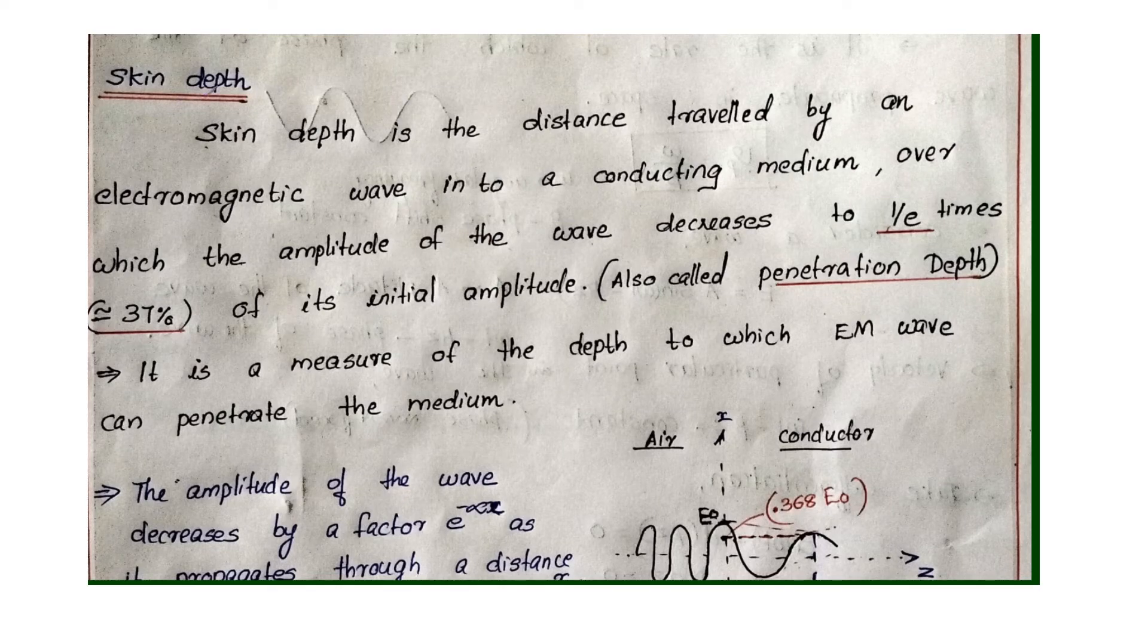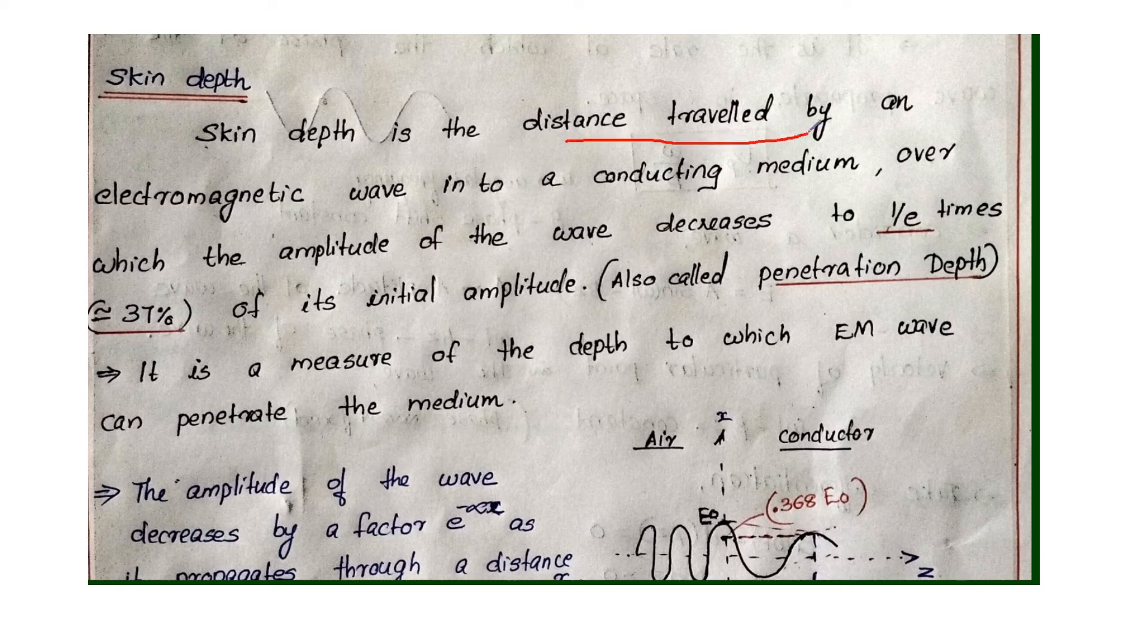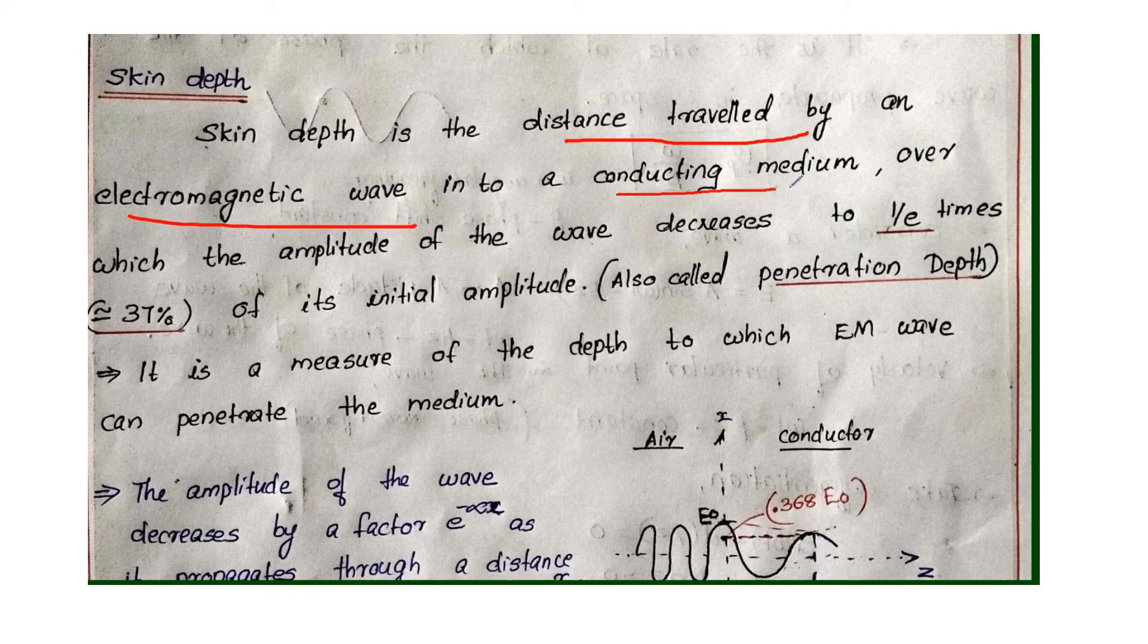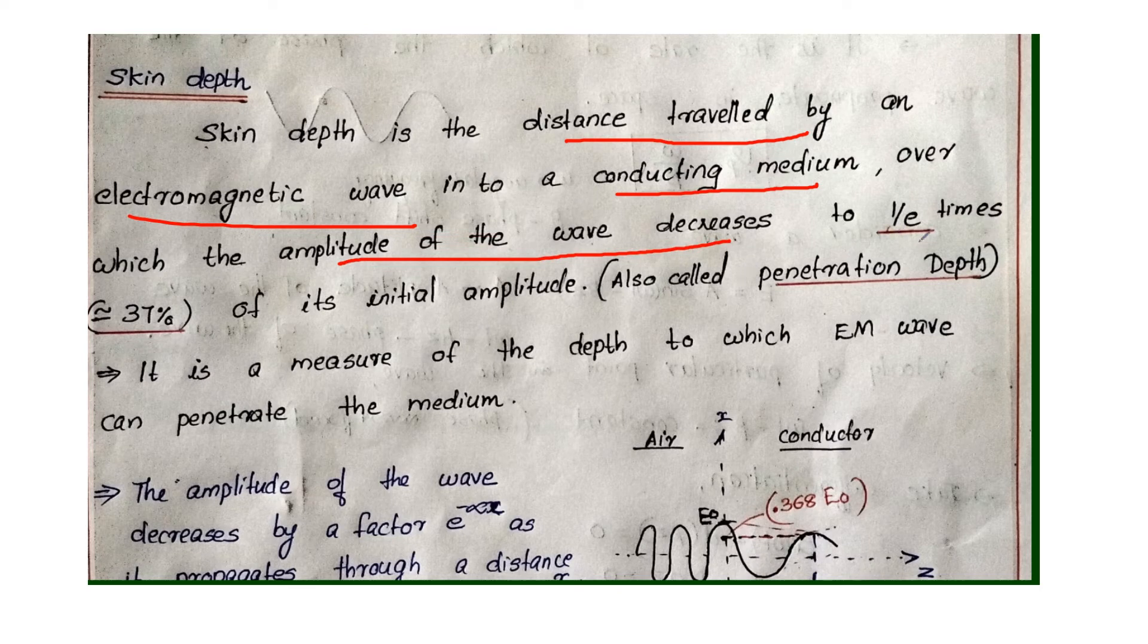Dear students, our next topic is skin depth. Skin depth is the distance travelled by an electromagnetic wave into a conducting medium over which the amplitude of the wave decreases to 1 by e times of its initial amplitude.